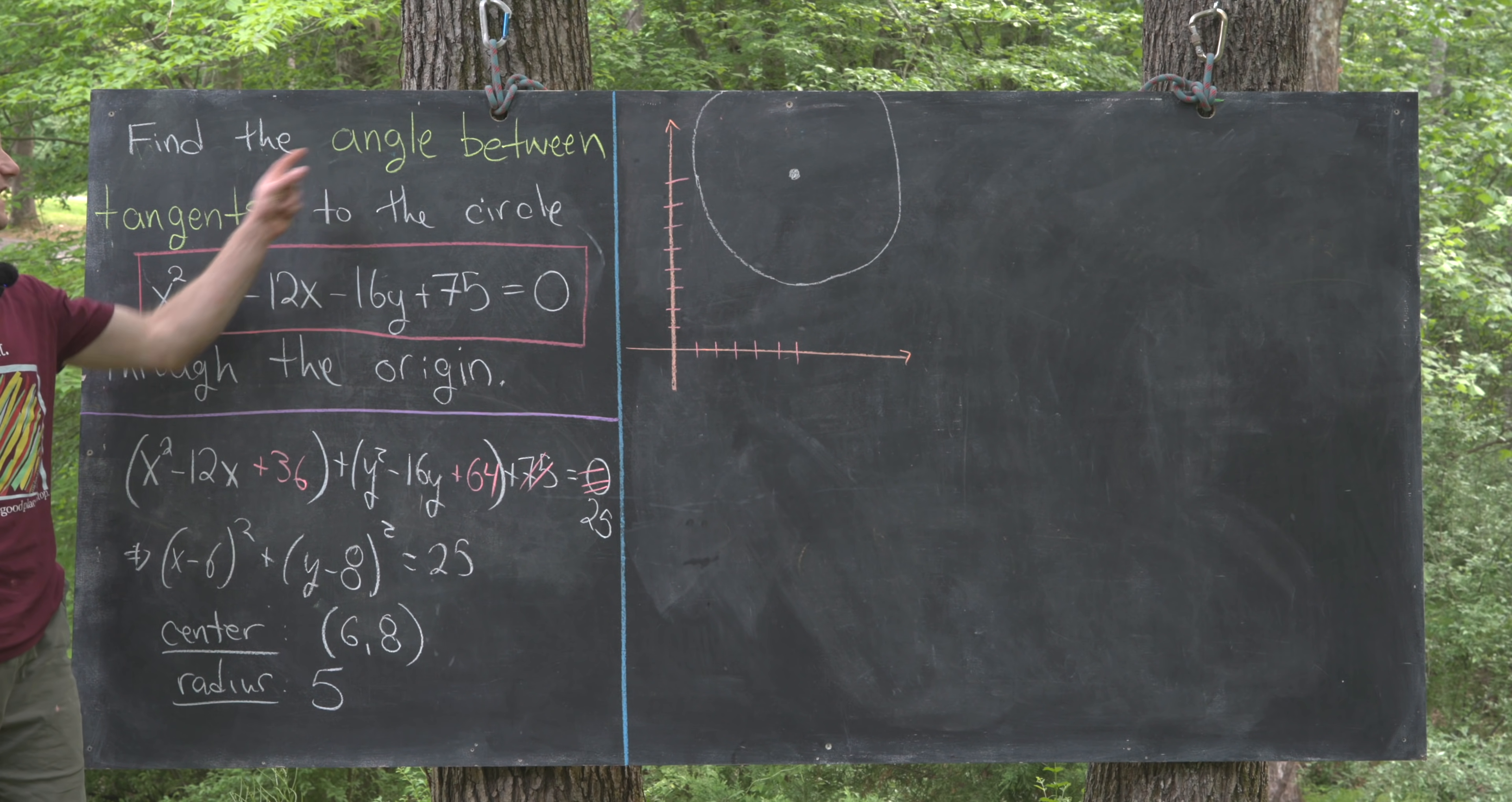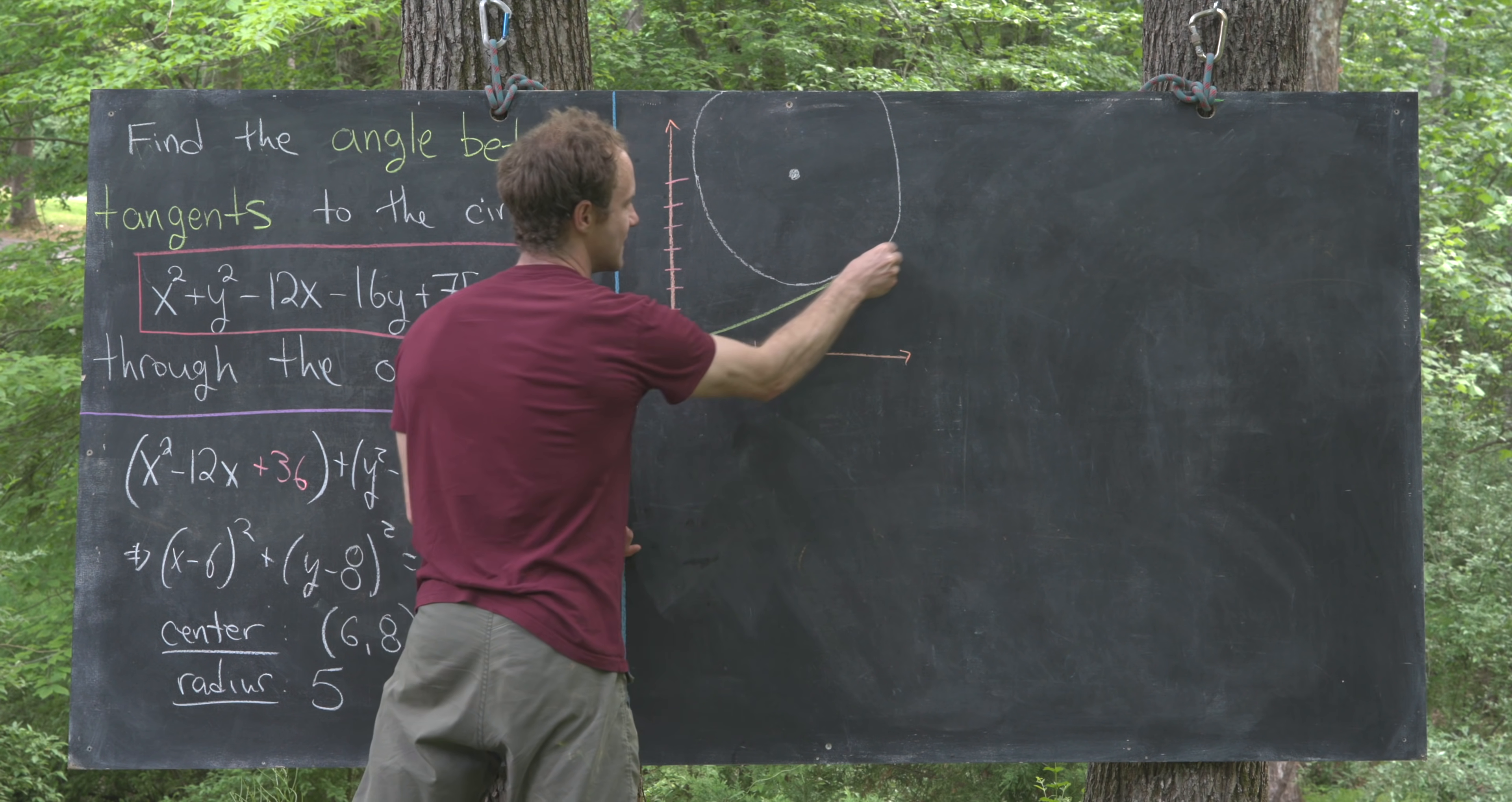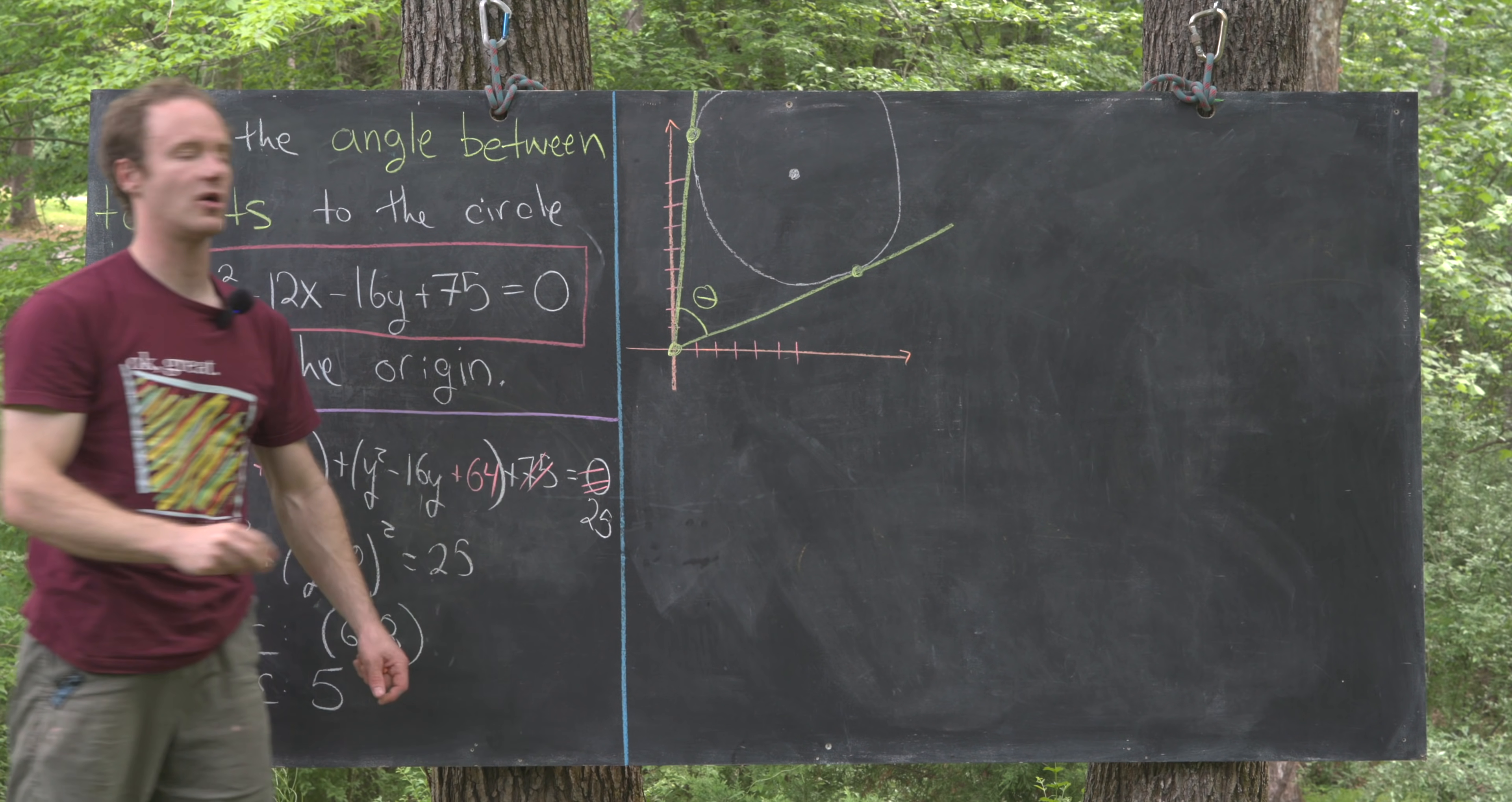Notice we want to find the angle between the tangents that are on the circle and that go through the origin. If we think about all the lines that go through the origin that are tangent to the circle, we'll get one that goes below the circle and one that goes above. We'll get one line like this and another line like that.